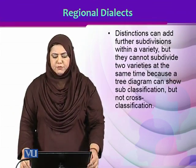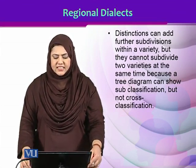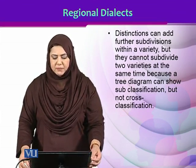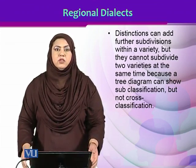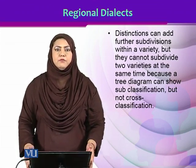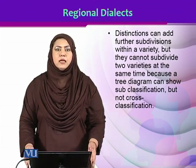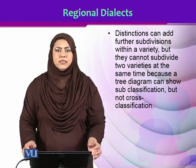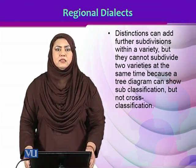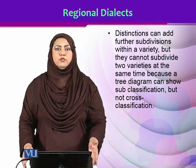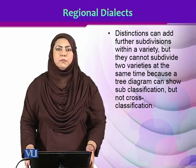Distinctions can add further subdivisions within a variety, but they cannot subdivide two varieties at the same time, because a tree diagram can show subclassifications but not cross-classifications. The idea of regional dialects is a very significant one, yet it has its own ambiguities — particularly regarding how a regional dialect would be differentiated from another in terms of drawing boundaries, and how the grey areas or blurred boundaries would be dealt with.